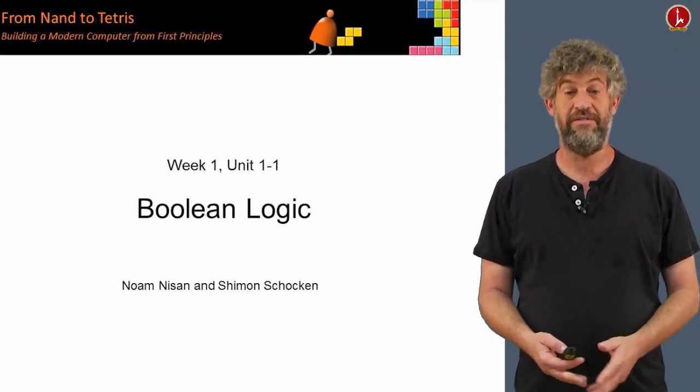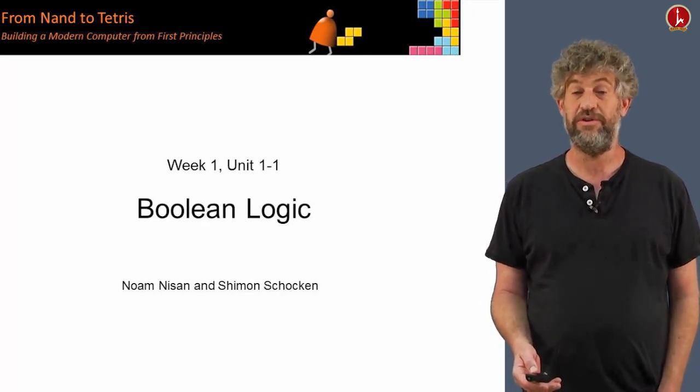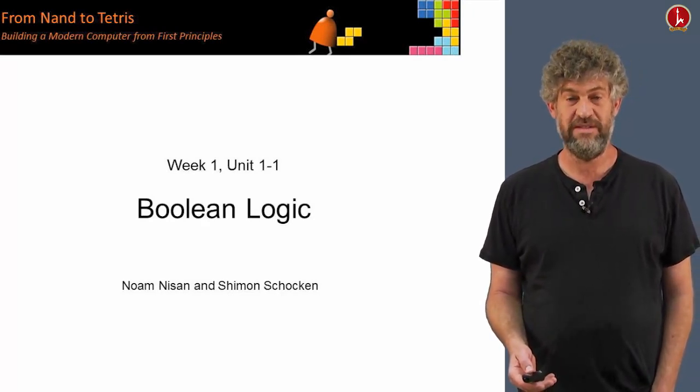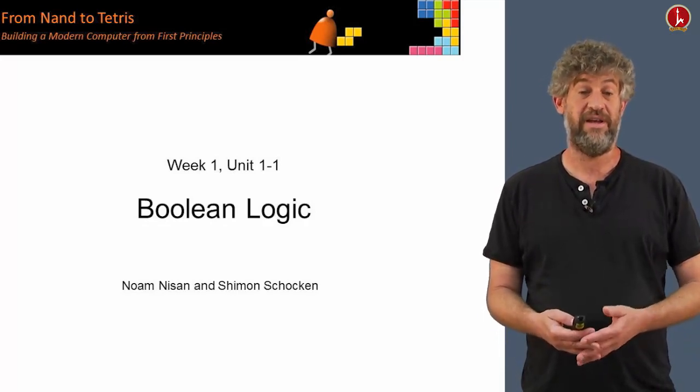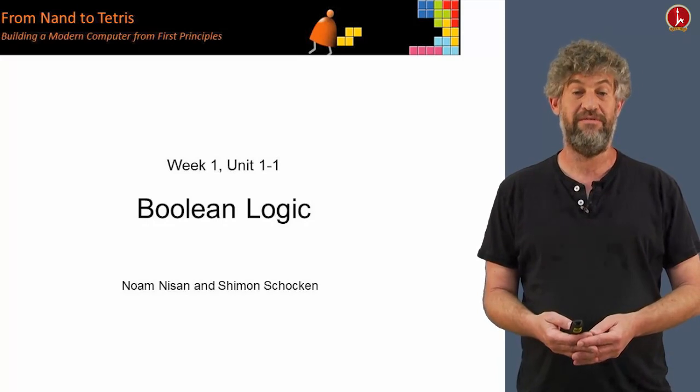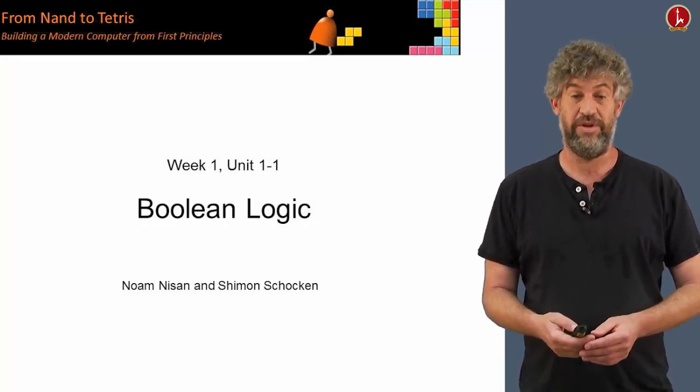So today we're starting our journey of actually building a computer. You've probably all heard that computers internally only have zeros and ones. The reason they only have zeros and ones is because that's what they can get away with. It's simplest to have only two possible values that you need to maintain, and that's going to be enough as we will see today.